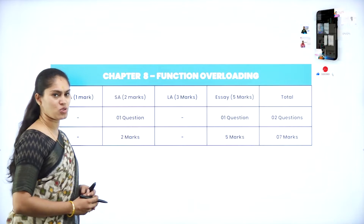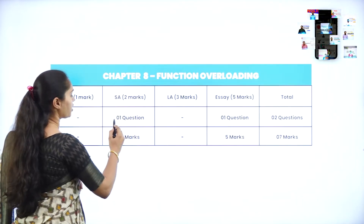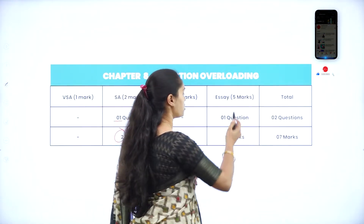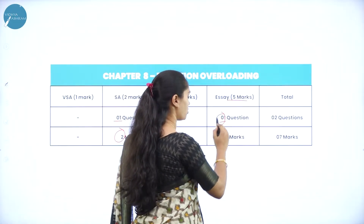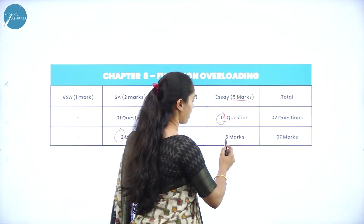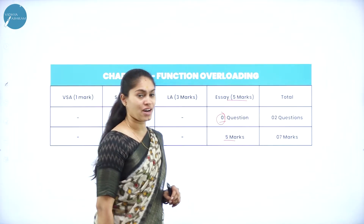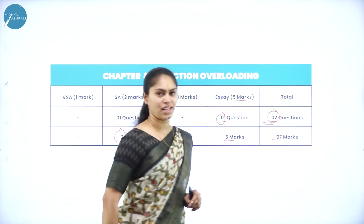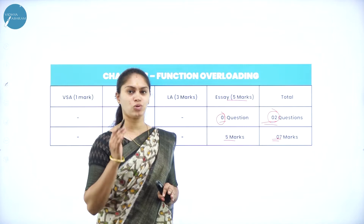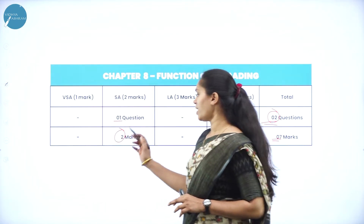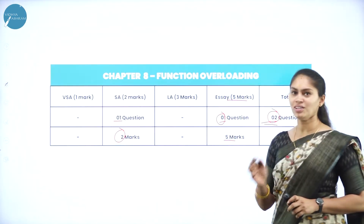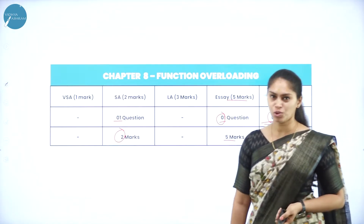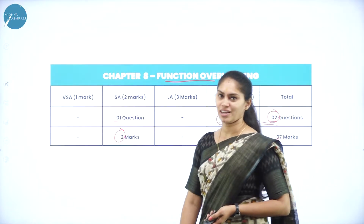If you see the marks distribution of this chapter, you are going to get one question for two marks. No need to worry about the one and three mark questions. We also have a five marks question from part D. You can expect two questions from this chapter, totally for seven marks. You need to study the two mark question and the five marks question.